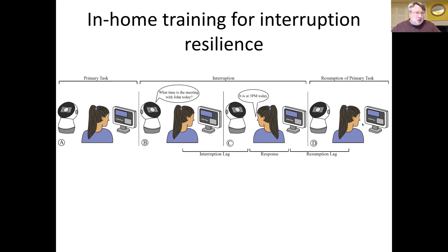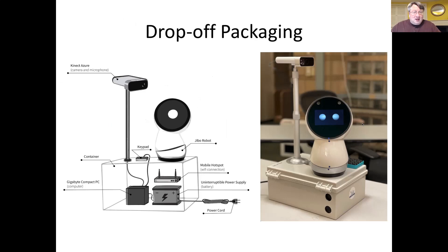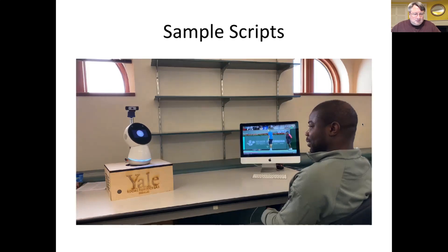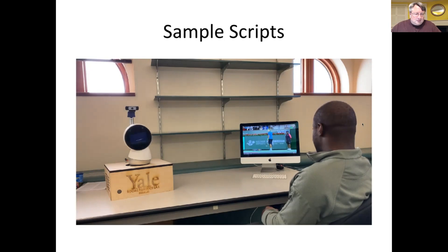We spent extra time packaging this up so we could do data collection during COVID using a complete drop-off based system with no human contact — we basically show up at someone's door, leave a robot on their doorstep, ring the doorbell and walk away. The system is simple enough that they can take it in, plug it in, and get it started all by themselves. When the system is running, it delivers between two and five short interruptions each hour during preset time periods the user specifies. Here's what one interruption might look like: 'Hey Emmanuel, are you done with the Peterson account yet?' — 'No, I will get it done by tomorrow morning.' — 'Great, email me when it's done.' — 'I certainly will.'